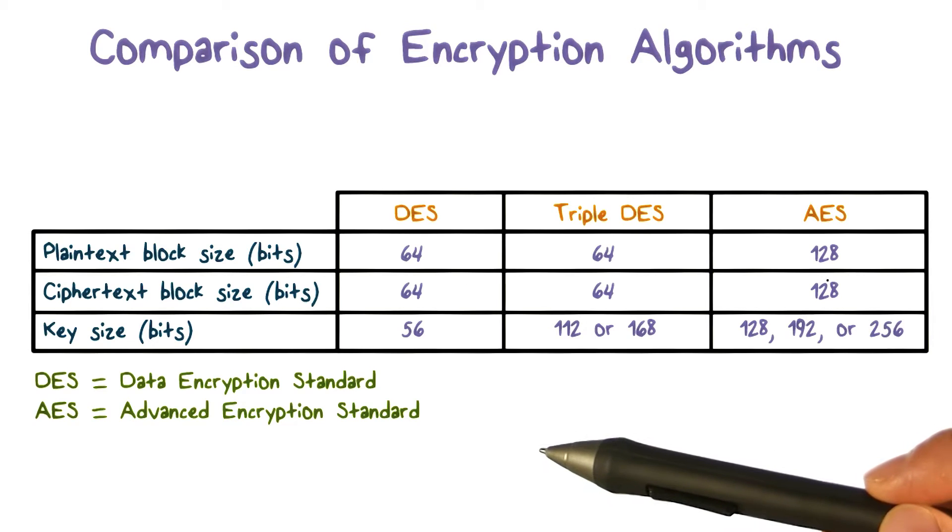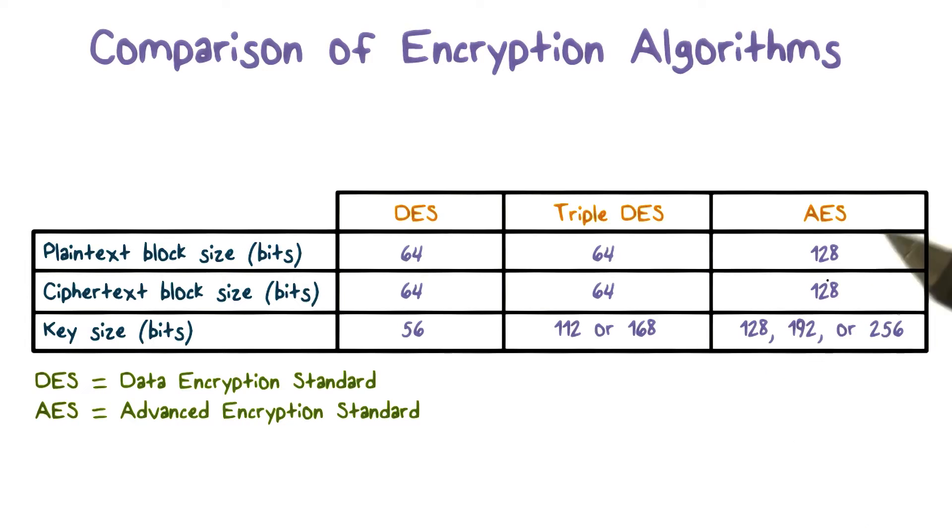To process a longer plaintext, we can first break the plaintext into a series of fixed size blocks and then apply block ciphers to each block. The most important symmetric algorithms, all of which are block ciphers,